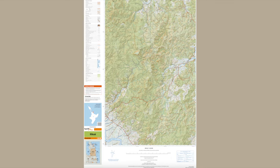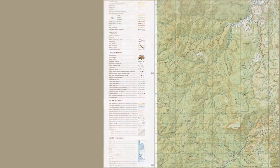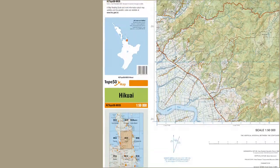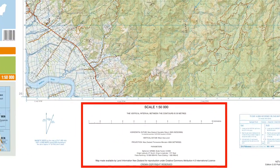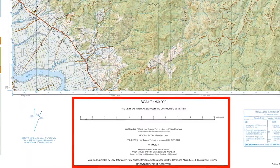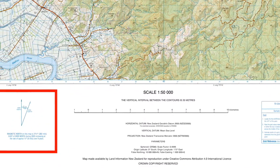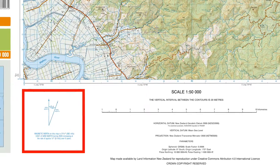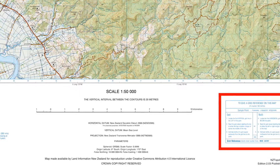Most topo maps have two main parts: the map and the margin. The left margin shows the legend and information on the map's area and date. The main feature of the bottom margin is the scale and contour information, which I will cover in this video. To the left of this is the magnetic declination information used for map and compass navigation. To the right is the grid reference information.